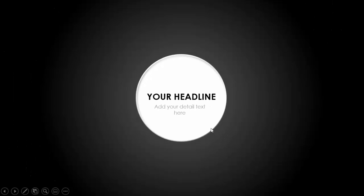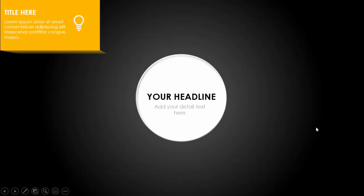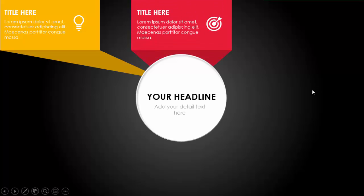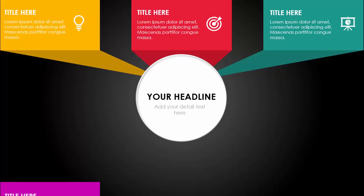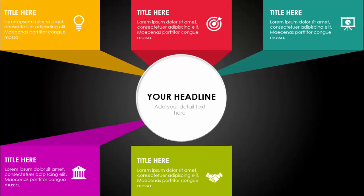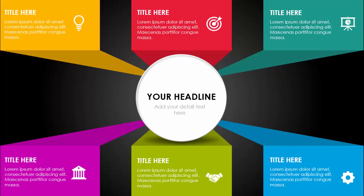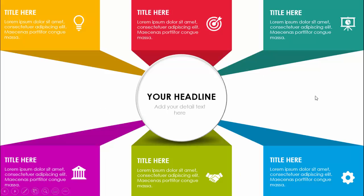In today's tutorial I'm going to show you how to create a six rectangular options infographic slide in PowerPoint. I've added a gradient fill for the background. When I click the oval shape, the circular headline appears and you can add detailed text. The first option comes with the title, detail text and icon. Then the second, third, fourth, fifth, and sixth options appear. I've created two slides — one with a dark background and one with a lighter color so you can choose depending on your requirement.